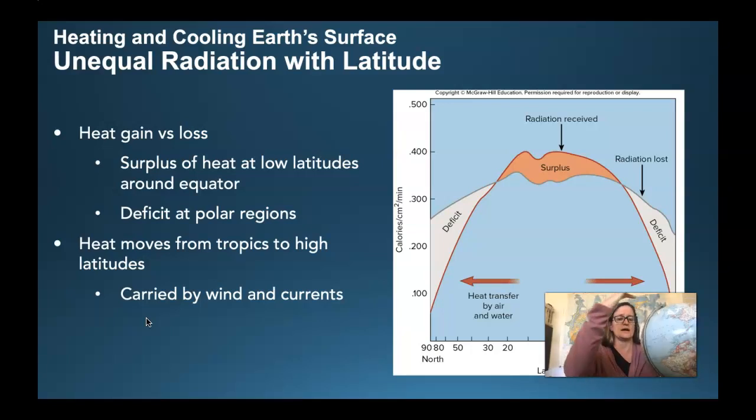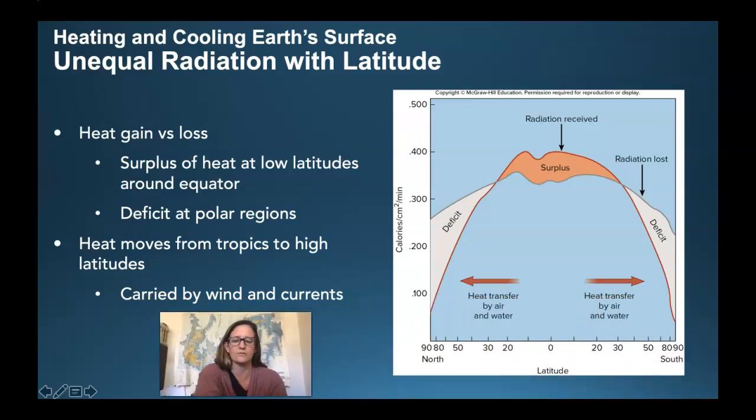Then a deficit of heat at the polar region. So the poles are cooler because they have the deficit, and then the equator is warmer because it has a surplus. How do we balance out that heat if we look at the Earth as a closed system? It's by wind.